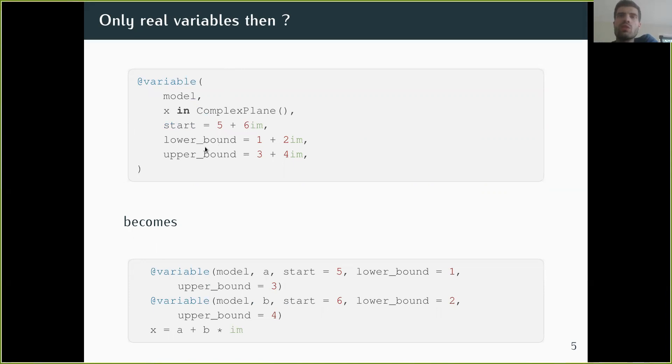If we only want to keep real variables, how do we support this? The way we do that is when the user writes this, Jump actually creates two real variables, and then x is simply a plus b times the imaginary unit. When you look at x, you don't see a variable, you see a complex expression. Even if the user wrote this, x is not a variable, it's a complex expression.